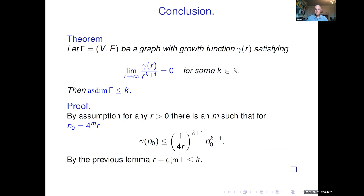We get the same theorem for manifolds of bounded geometry and polynomial growth. Without bounded geometry it's false — you can take a graph, thicken it into a two-dimensional manifold of volume less than one, and get infinite asymptotic dimension. It's unclear whether, assuming non-negative Ricci curvature, we can drop the bounded geometry assumption. This ends the first half of the talk.